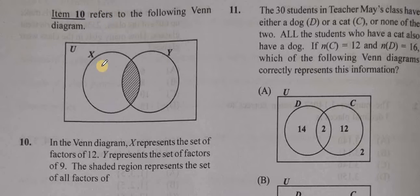Item 10 refers to the following Venn diagram. So we have two sets, x and y, and we're told that x represents the set of factors of 12.